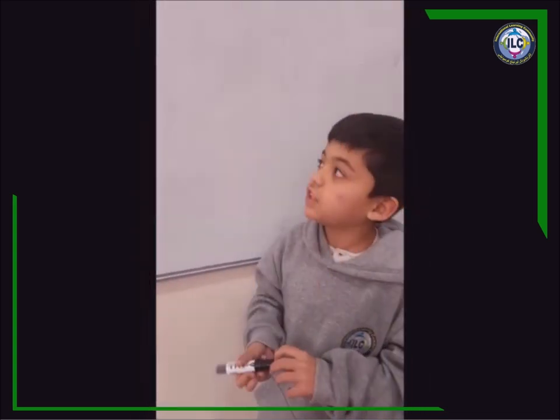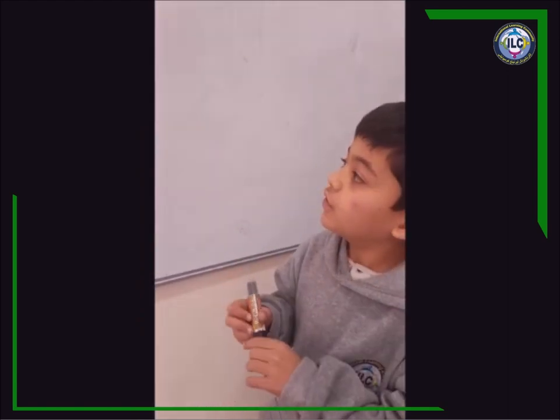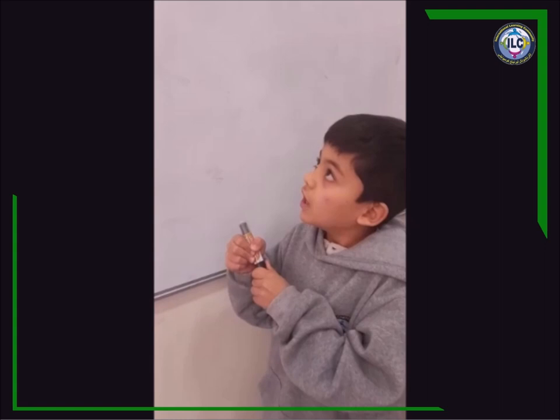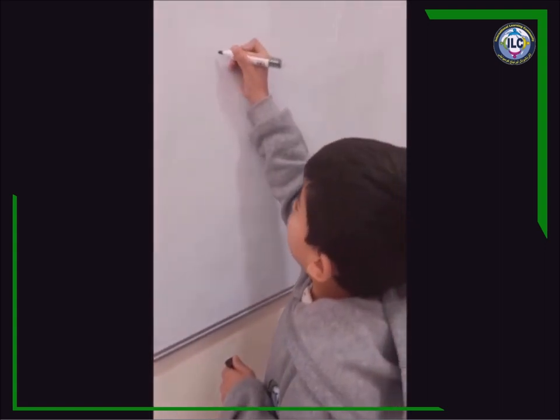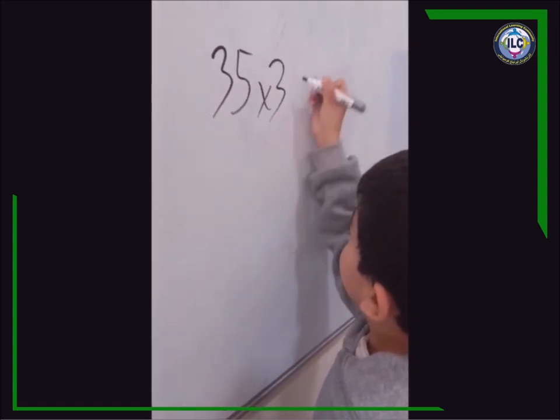And today I'm going to teach you how to multiply a number by itself when it ends with 5. I'm going to use an example: 35 times 35.